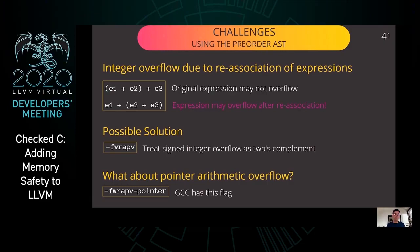One issue is that an expression may not overflow on its own, but may overflow after we re-associate the expression in the preorder AST. One possible solution is to treat signed integer overflow as two's complement, which we are pursuing by enabling the flag -fwrapv in Clang. However, the question of pointer arithmetic overflow remains: GCC has a flag -fwrapv-pointer which treats pointer arithmetic as two's complement, but we couldn't find a corresponding flag in Clang. This is still an open problem.